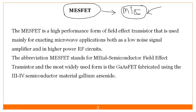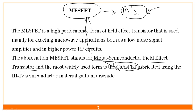The full form of MESFET is the metal semiconductor field effect transistor. It is also widely known as GASFET. GASFET and MESFET refer to the same device. GASFET stands for gallium arsenide FET. Gallium arsenide is a compound — not a single crystal — because gallium is trivalent and arsenic is pentavalent, so they are mixed together to form gallium arsenide.